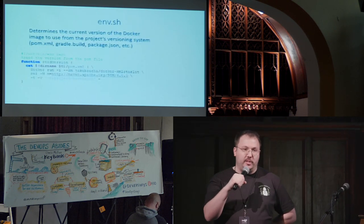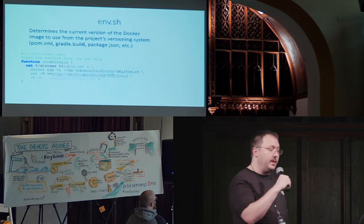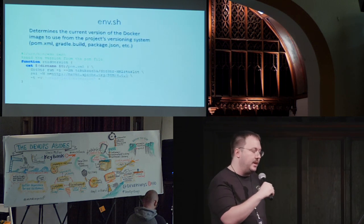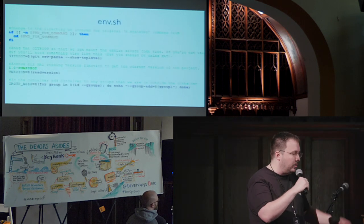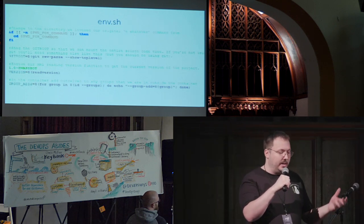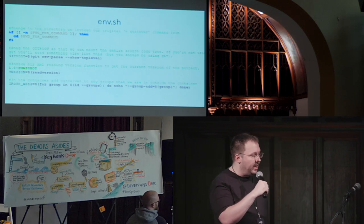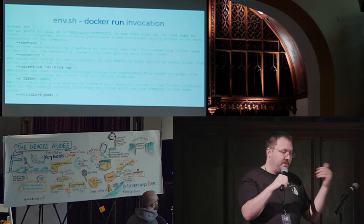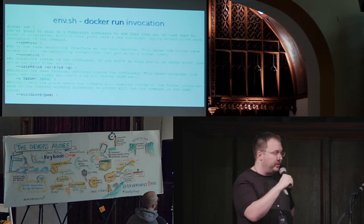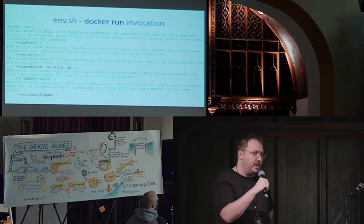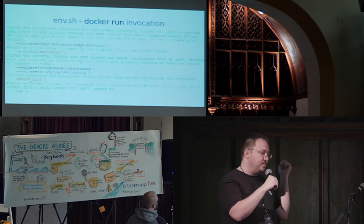One thing you need to do is make sure you get the right Docker image for the right version of your code. In this case, we have a project managed by Maven — this part would differ depending on your project. We read the POM file to get the version so we get the right Docker image. We use the git root to mount the user's data directory for their project inside Docker, get the version from the previous step, and add them to all the groups they had outside the container. The docker run command uses --rm to ensure no container is left behind after invocation, and --net=host so it joins the same network as the host and appears to be on the same computer.